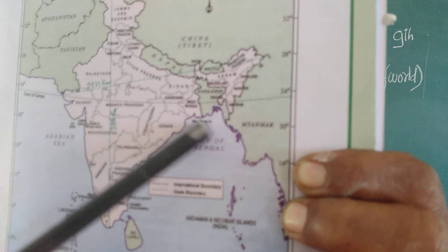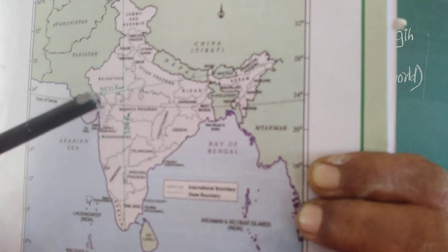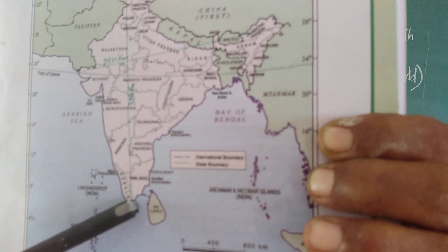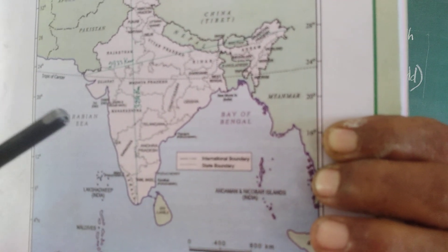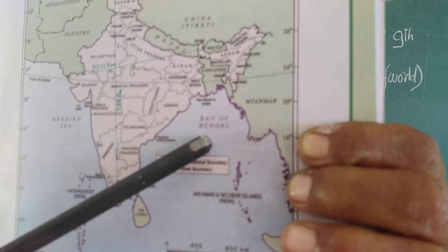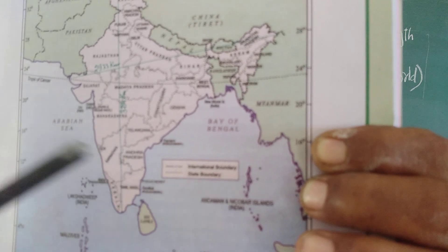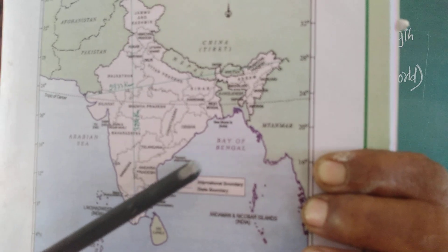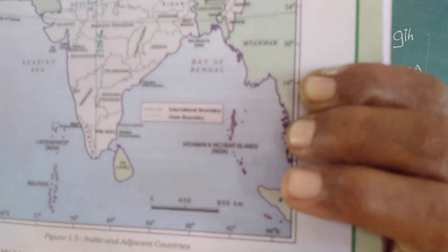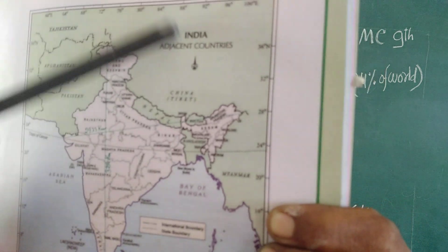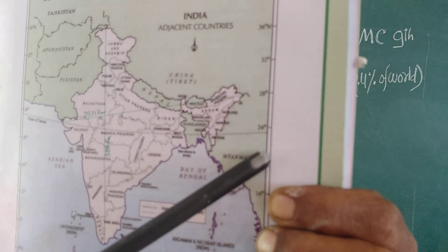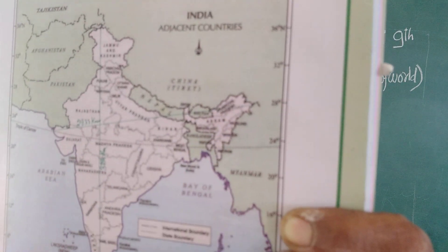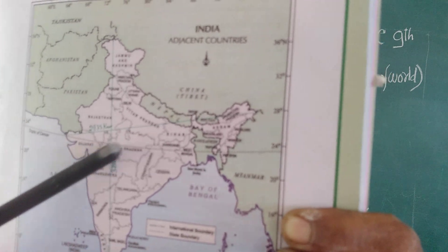From 22 degrees latitude southward, the Indian landmass extends and divides the Indian Ocean into two parts — the Bay of Bengal on one side and the Arabian Sea on the other. The vertical lines on the map are called longitude lines, and the horizontal lines are called latitude lines.